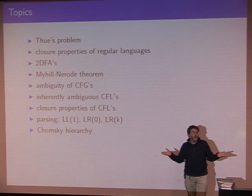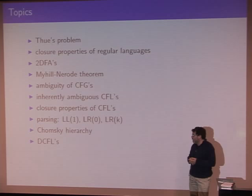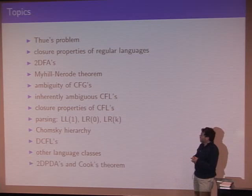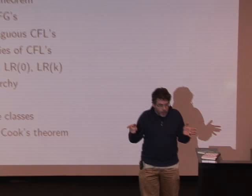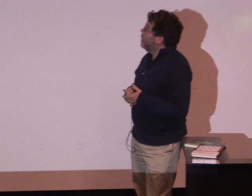We look at closure properties of context-free languages, parsing methods like LL(1) or LR(0), the Chomsky hierarchy including context-sensitive languages not typically covered in CS360, DCFLs (deterministic context-free languages), sometimes other language classes, and two-way DPDAs — the pushdown automaton model where you can move in both directions on the input.